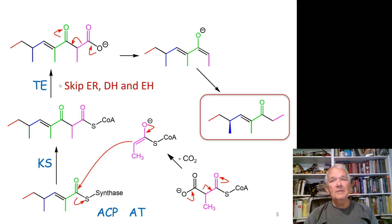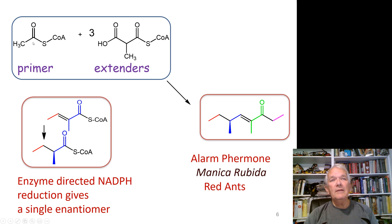So overall we have the same old primer but three different extenders. One important note: when you reduce these double bonds in that very first step, the enzyme directs the reaction so it gives a single enantiomer. That's how you get a chiral compound — because it is enzyme-directed.